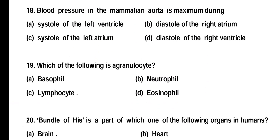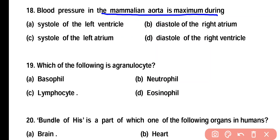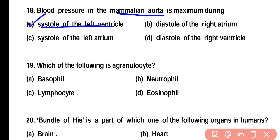Question number 18. Blood pressure in mammalian aorta is maximum during: systole of the left ventricle, diastole of the right atrium, systole of the left atrium, or diastole of the right ventricle? Correct answer is option A. Blood pressure in the aorta is maximum when the left ventricle contracts.